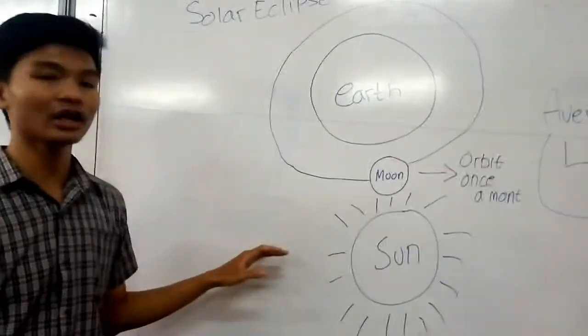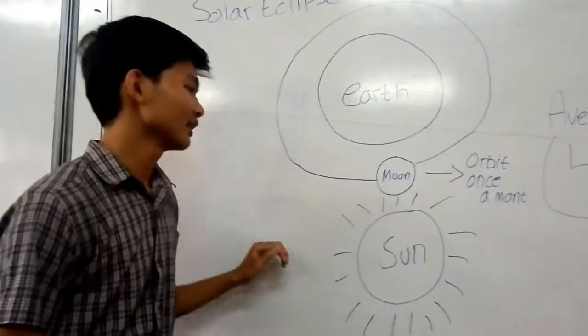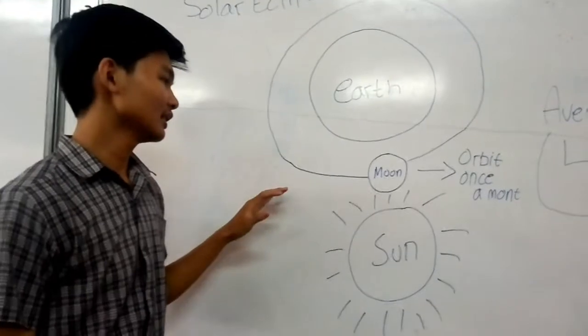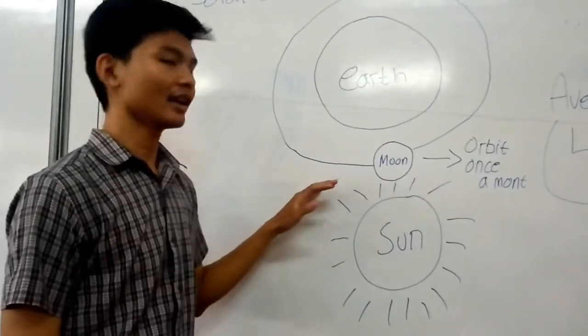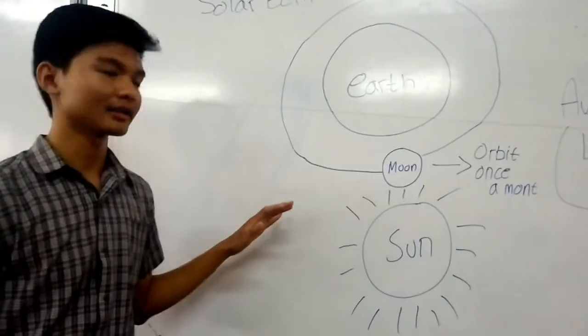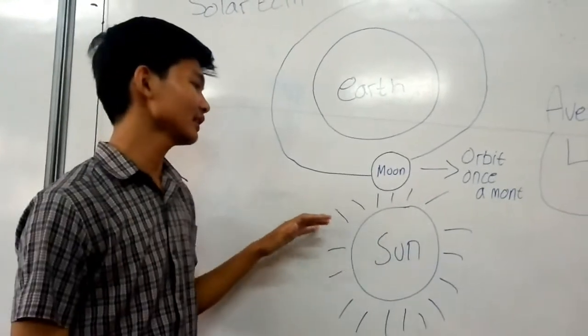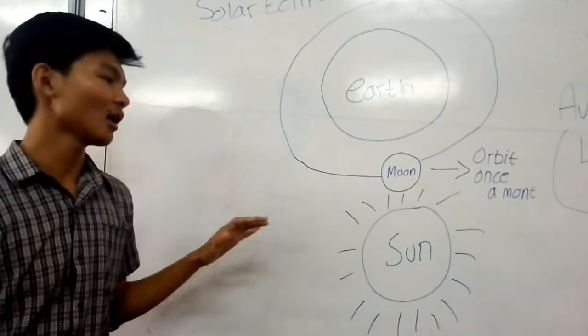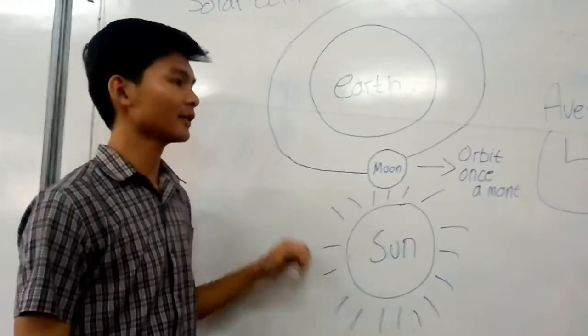How does the solar eclipse happen? The sun orbits the moon in one light. So the moon and the sun became in one land in every 100 years.